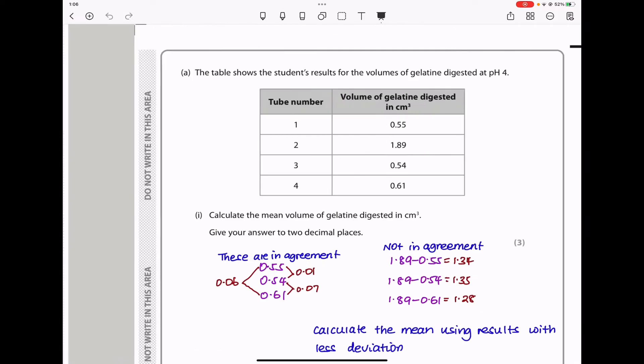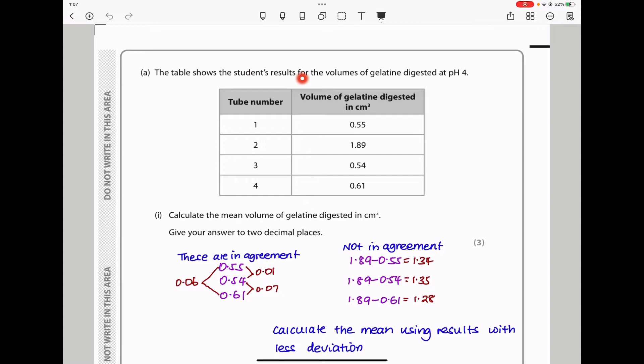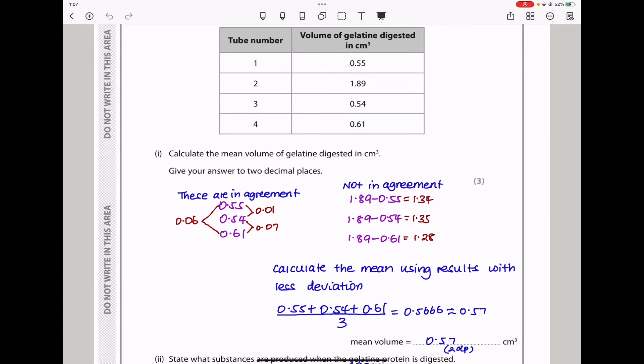The table shows the student's results for the volume of gelatin digested at pH 4. The first question here is asking us to calculate the mean volume of gelatin digested in centimeters cubed. In order to do this, I had to find out which results are going to be in agreement. So if I compared this and that, I saw there was no agreement because the difference between these two was that. The differences are really big to consider those results concordant.